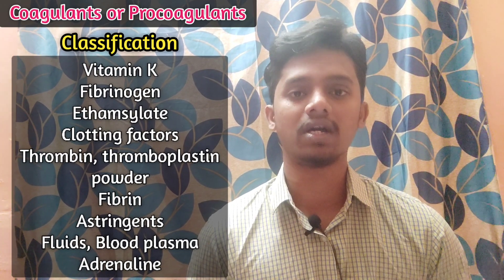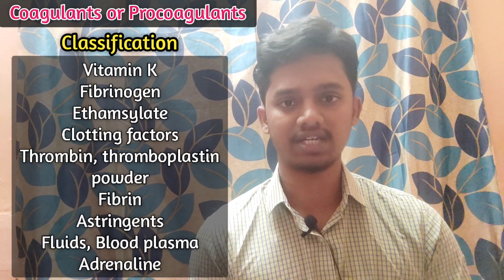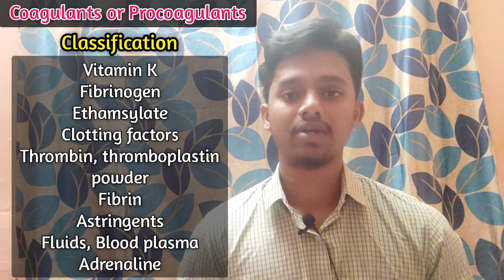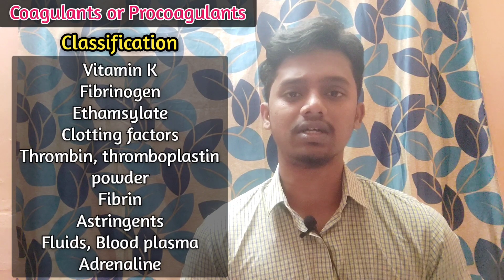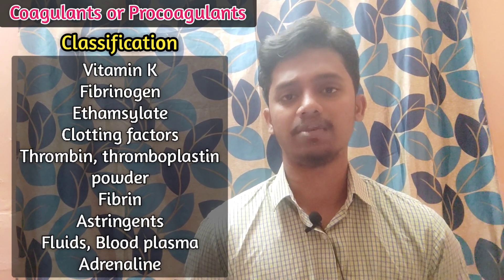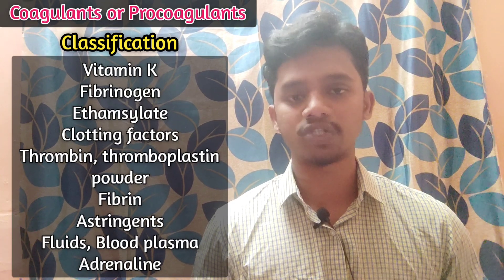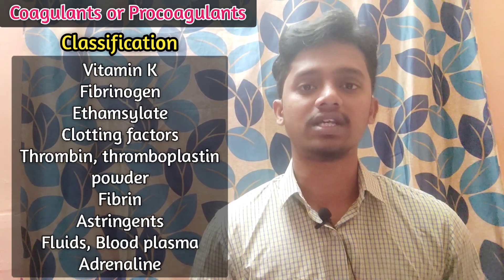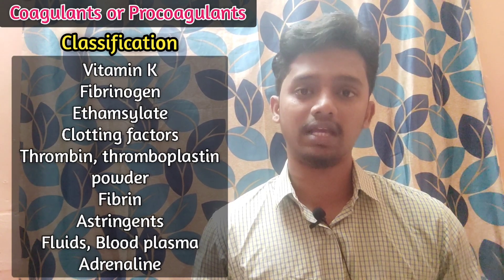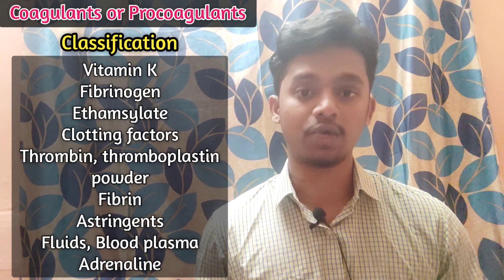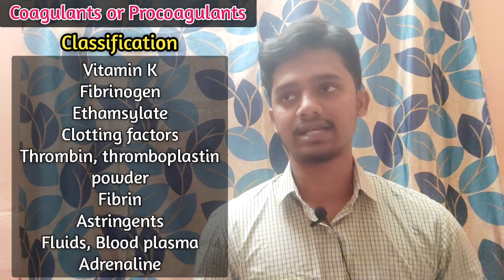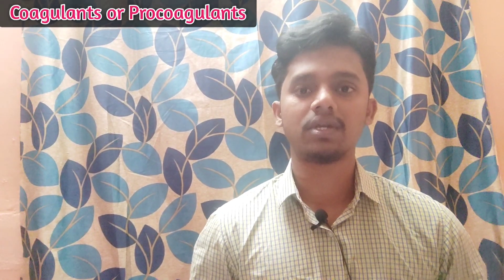Plasma can be used externally if there is a cut and blood is lost — whole plasma can help by replenishing fluids in the body. There is also an interesting fact: snake venom promotes coagulation.